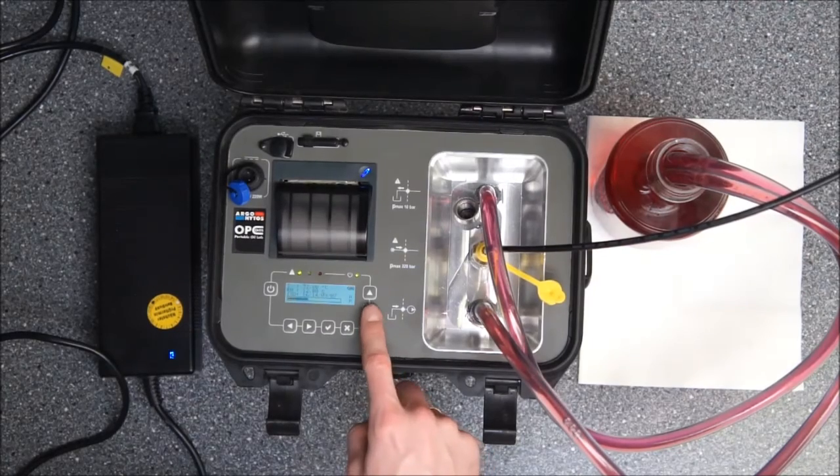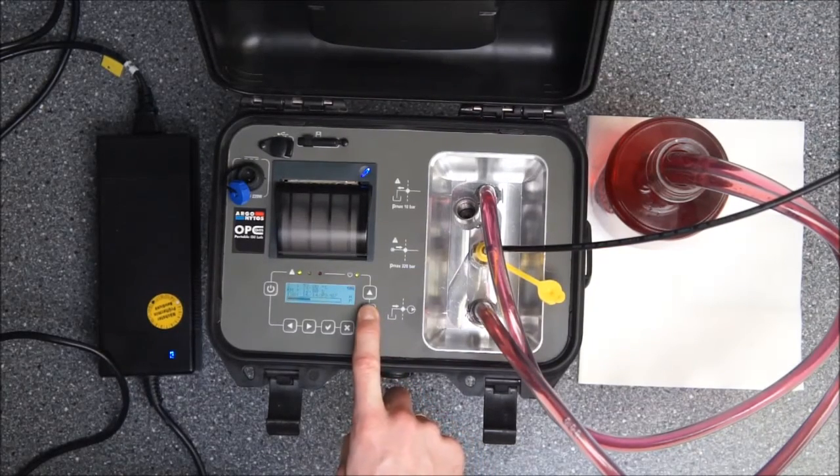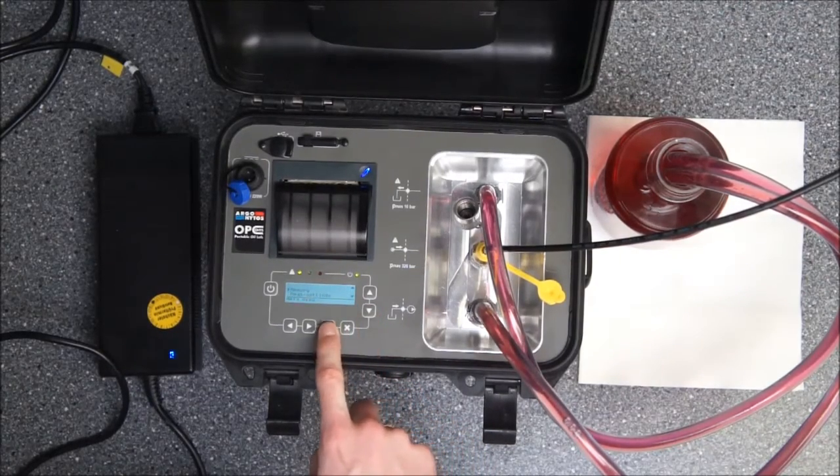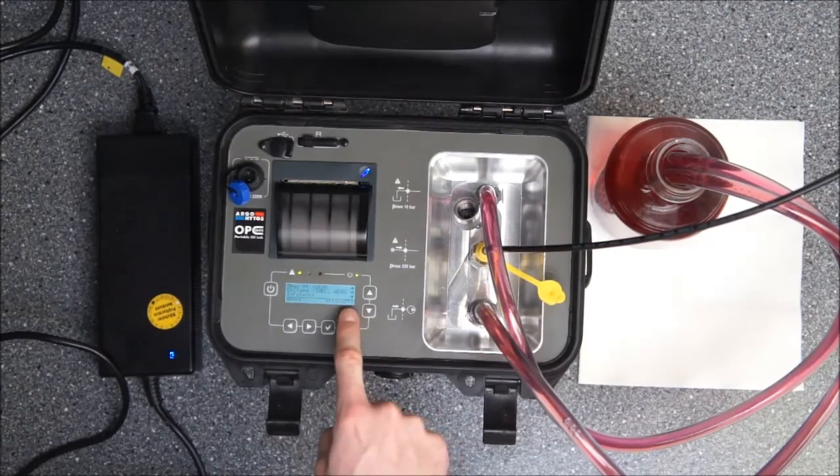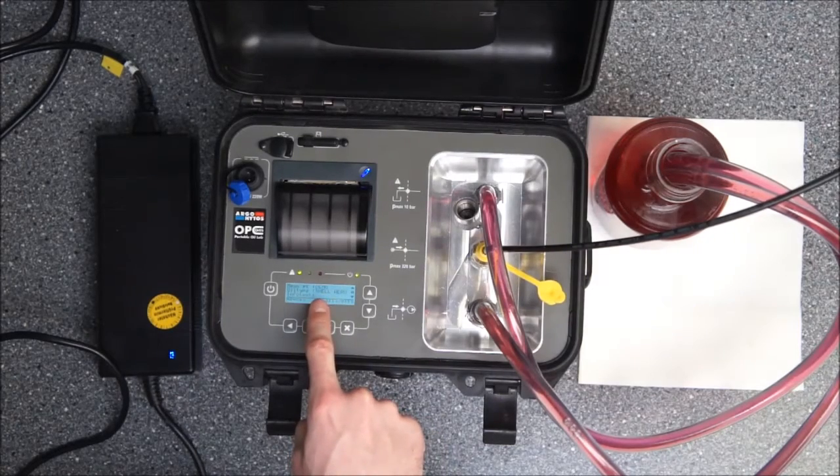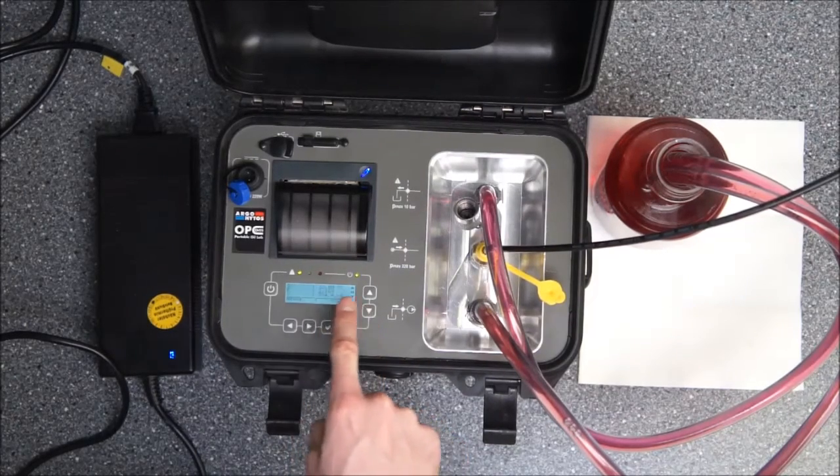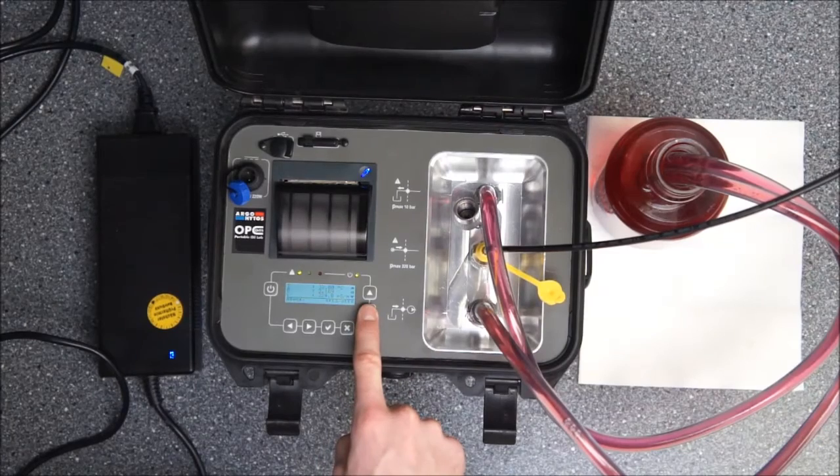We will now one time more just look at the menu and look at the data that we have measured in the memory. And you can see this is the last measurement that we have taken also with the indication of which measurement point it has been and also the oil type. And you will see all the readings of the measurement that we have done.